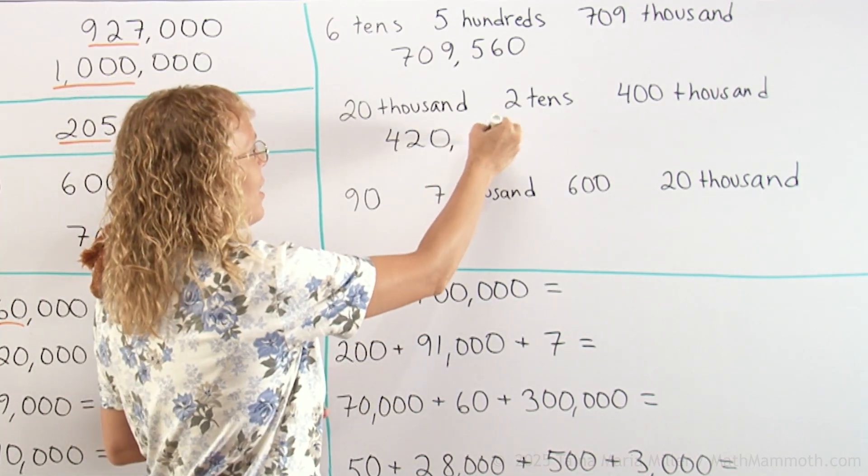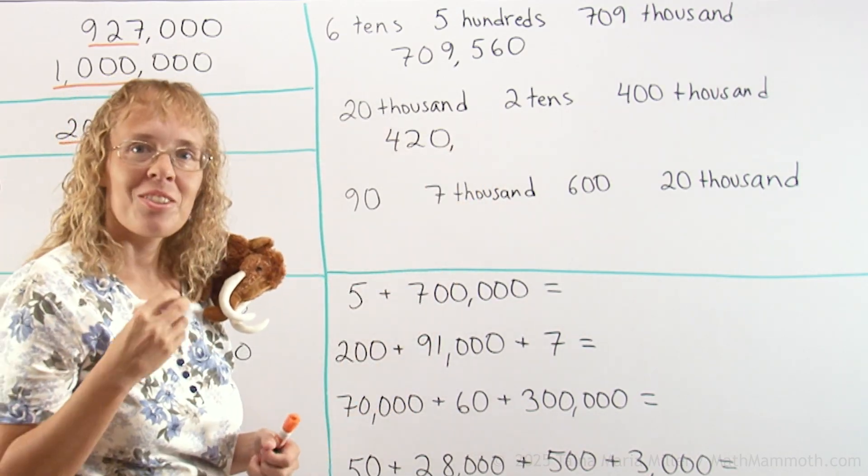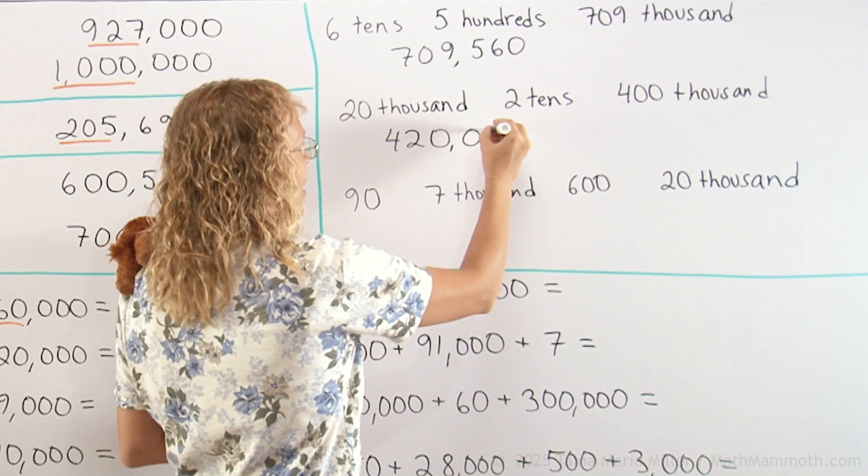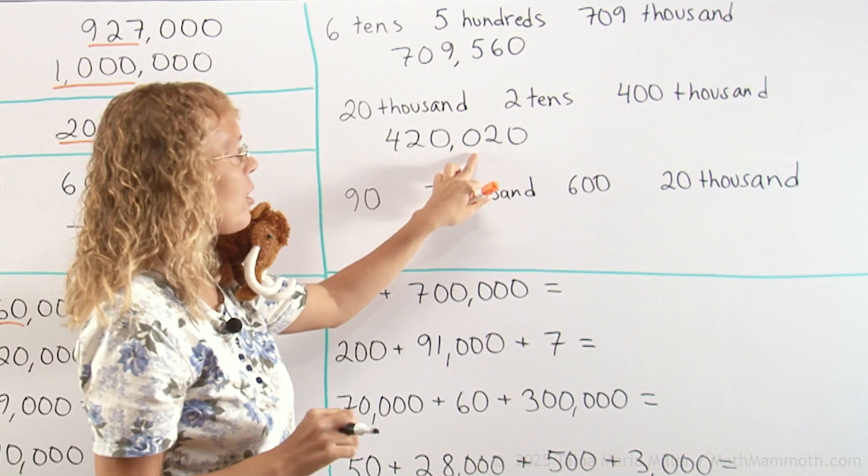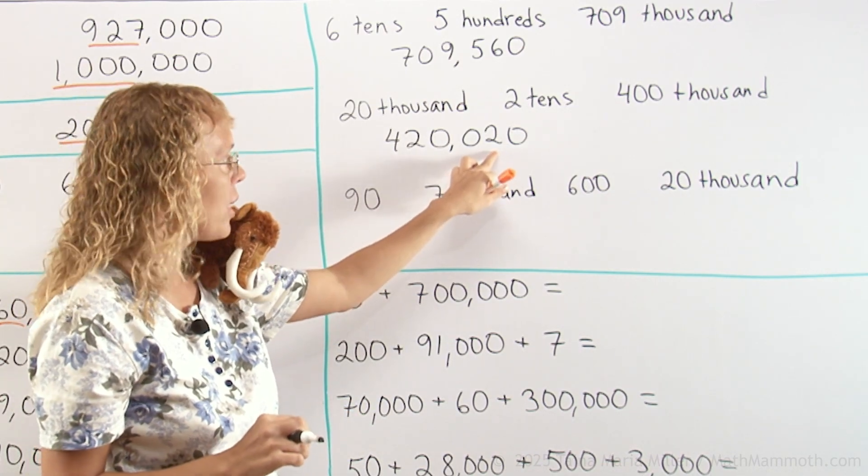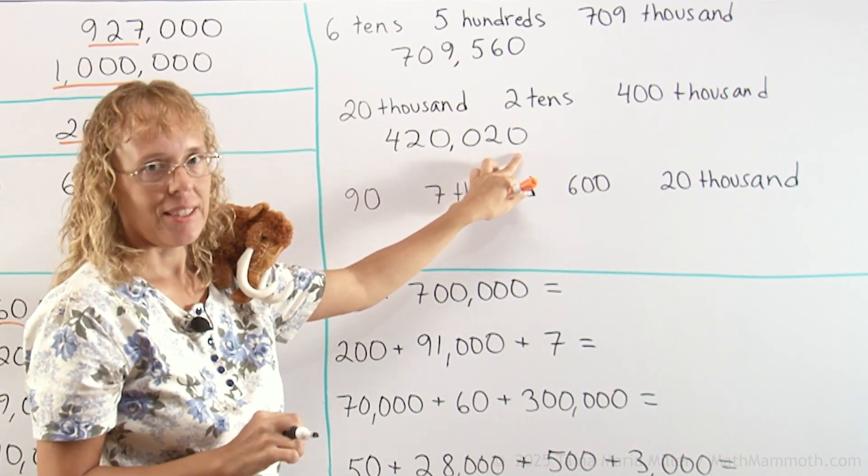Now you can't just write twenty here. You have to write zero and then twenty. You see why that is? You have to have three digits after the comma. And there are no hundreds. There's two-tenths and no ones or units.